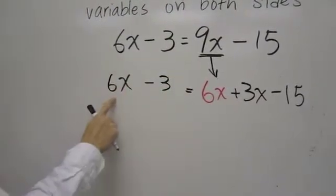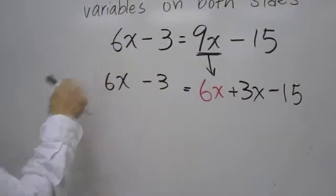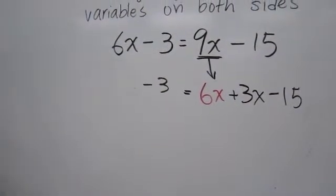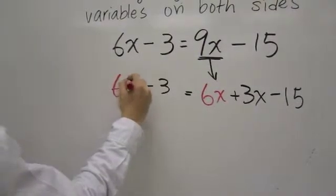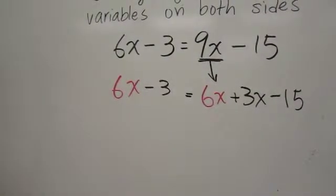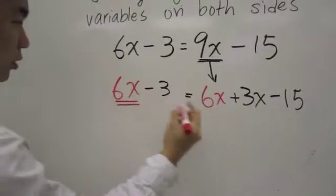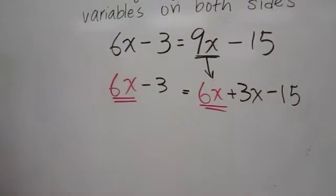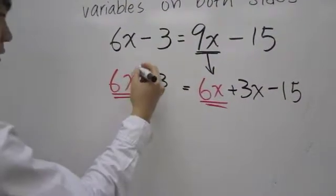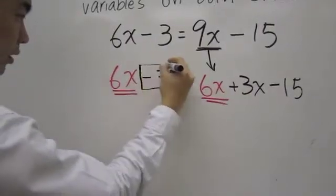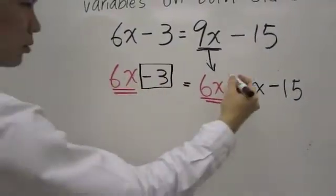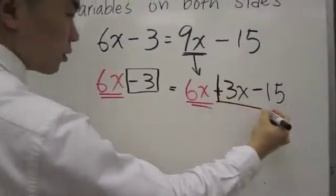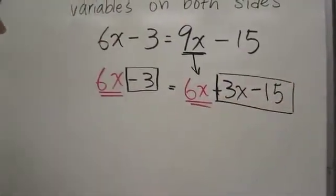So there's my new equation and I see that I have a 6x on both sides. I'm going to erase the 6x on the left side and rewrite it in red to sort of emphasize this and make it very clear. I have a 6x on both sides of the equal sign. That means that the negative 3 has to equal the 3x minus 15.